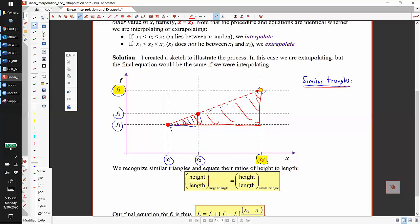Therefore we can write, just from some simple trig, we can write that the ratio of the height to the length of the bottom—and that in this case this would be f3 minus f1—the ratio of that to the x length, the horizontal length, which would be x3 minus x1...